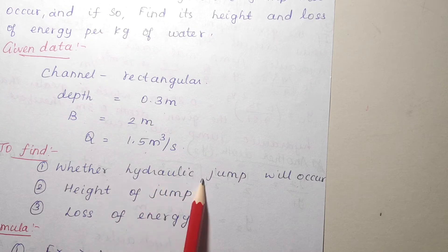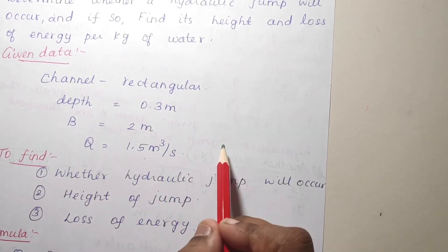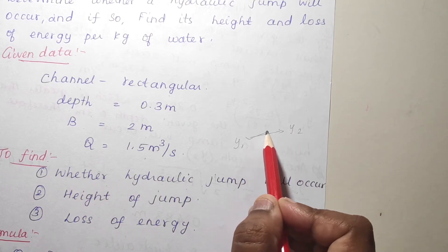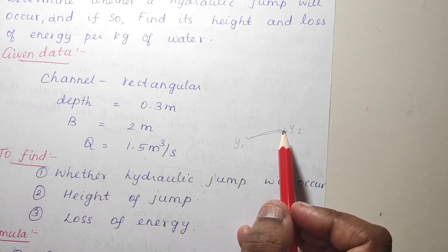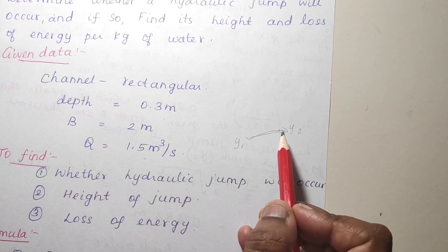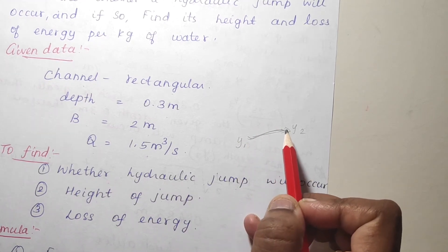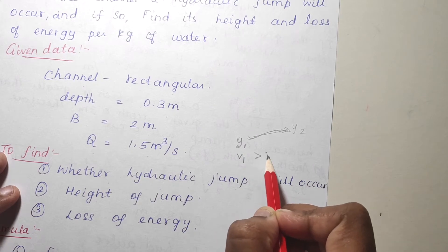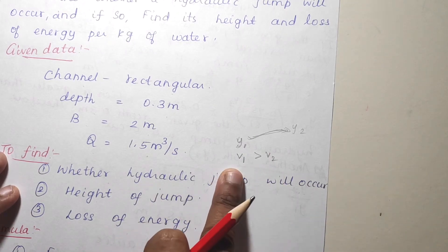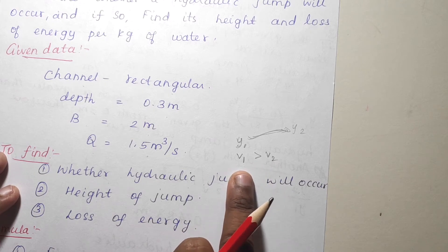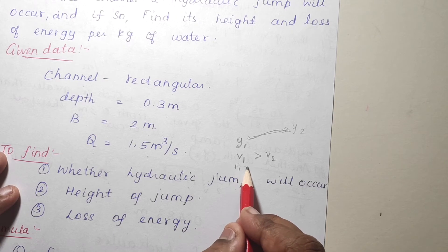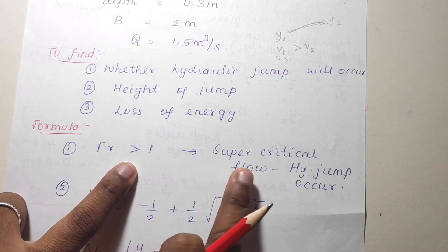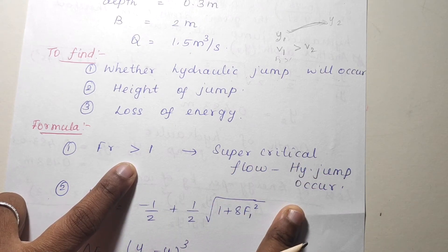How do we find whether the hydraulic jump will occur? A hydraulic jump is a sudden increase in depth — not just any change. If there is a sudden increase in depth, we call it a hydraulic jump. Before the jump, V1 will be greater than V2. If the Froude number is greater than 1, it is supercritical flow, and then the hydraulic jump will occur.